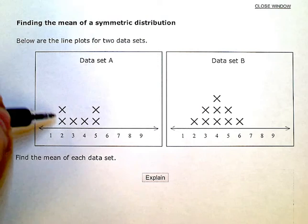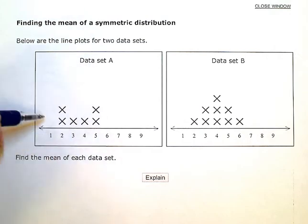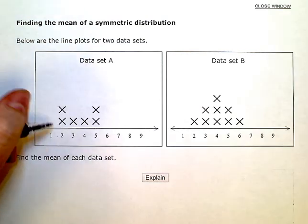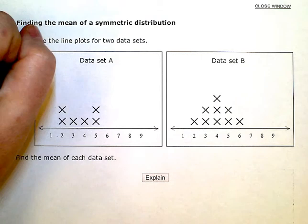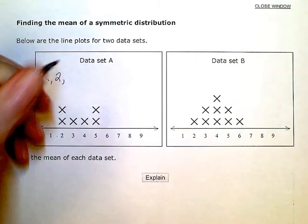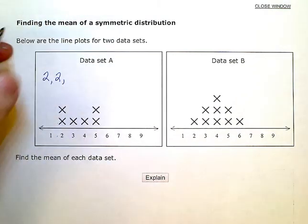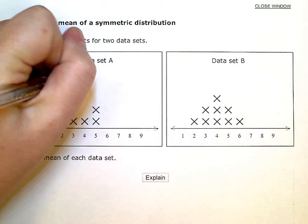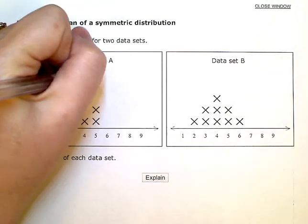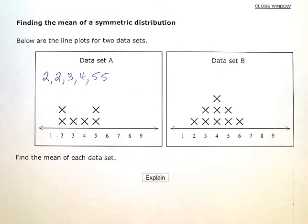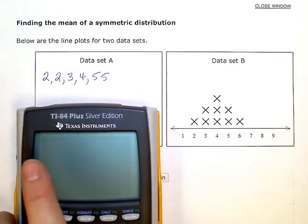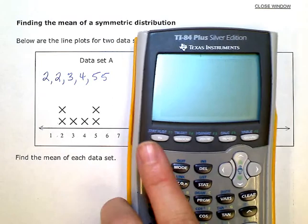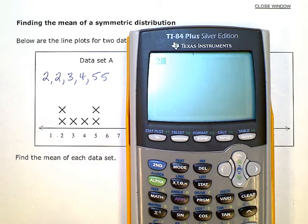So if I was going to write this as a list of numbers, I would write 2 twice, once for each x, a 3, a 4, and then two 5s. And I need to find the average of those numbers. So I'm going to go ahead and add them up in the calculator. So 2 plus 2 plus 3 plus 4 plus 5 plus 5.